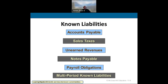Sales tax payable is when we collect money on behalf of the state or another entity. That's not our money — we collect it as cash and have to remit it to the state. Unearned revenues are revenues we've received but have yet to earn. It's money we've received but haven't earned yet.